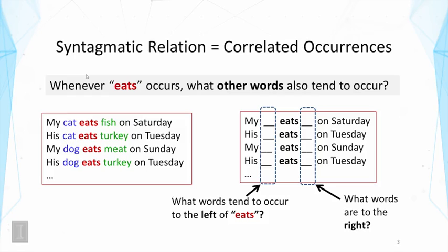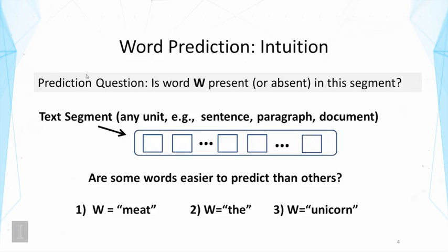This would force us to think about what other words are associated with each. If they are associated with each, they tend to occur in the context of each. So more specifically, our prediction problem is to take any text segment, which can be a sentence, a paragraph, or a document, and then I ask the question: is a particular word present or absent in this segment? Here, we can ask the question about the word W. Is W present or absent in this segment? Now, what's interesting is that some words are actually easier to predict than other words.